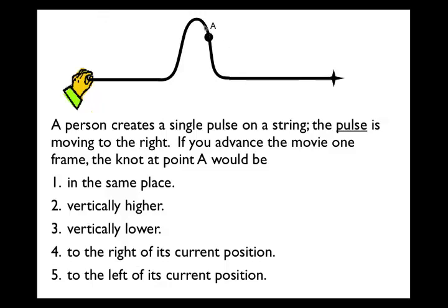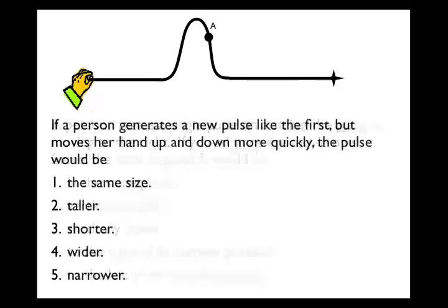Point A, being on the leading side of the pulse traveling left to right down the string, is in a place where the pulse is pulling the string above equilibrium. So an instant later, essentially this whole pulse shape will be shifted a little bit to the right, and point A on the string should be vertically higher than it is right now. Importantly, this is a transverse pulse, so there is no movement of point A either to the right or to the left of its current position.